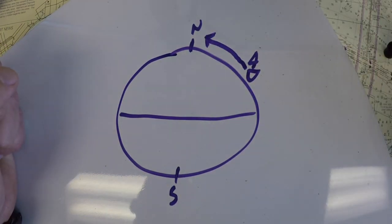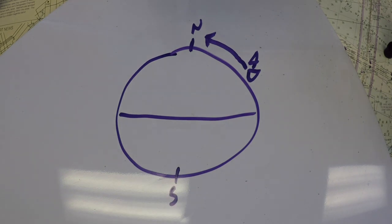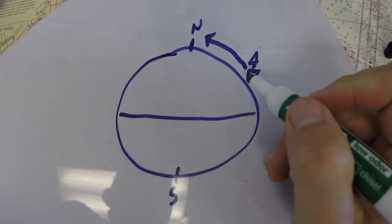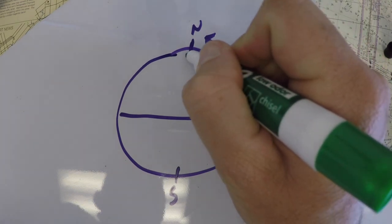And that is kind of true. But really what your compass is doing is it's pointing to the pole itself, not along the curvature of the Earth, but like directly to the pole.